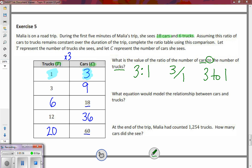Or as a fraction three over one, I could also write it three to one. There's our value of the ratio. What equation would model the relationship between cars and trucks? So if I wanted to find out the cars, and it already told me to use C for the cars, that would be equal to trucks times our constant of three.